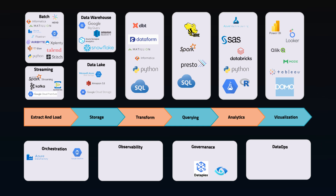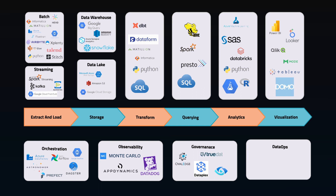For orchestration, the tried and true Airflow is the most common one, with Dagster, Prefect, and Astronomer being solid alternatives. Observability has some cool new tools such as Monte Carlo, Datadog, and AppDynamics. Governance options are Ovaledge, TrueDat, and Alation. And for DataOps, we have ATLAN and Miltano.